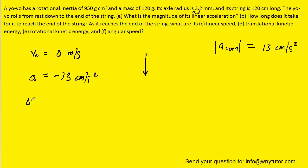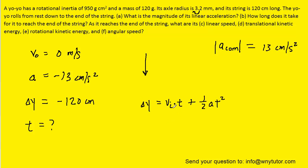The displacement of the yoyo is simply going to be the overall length of the string, which is stated as 120 centimeters. Since the yoyo is traveling downward, we'll have to call that vertical displacement negative 120 centimeters. We can investigate the equations of kinematics from earlier chapters and come up with the following equation to find the time. Since the initial velocity is 0, that term will drop out. We can solve for time by multiplying both sides by 2, dividing by acceleration, and then taking the square root.